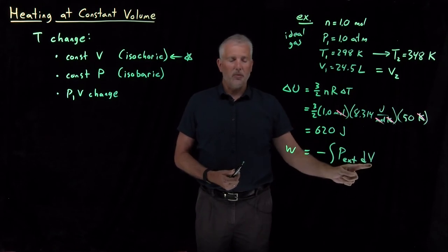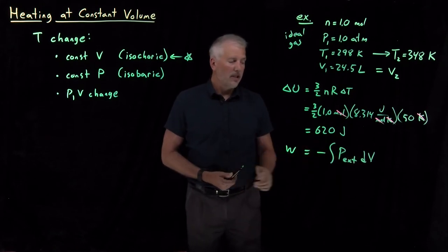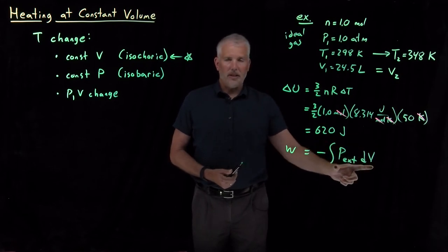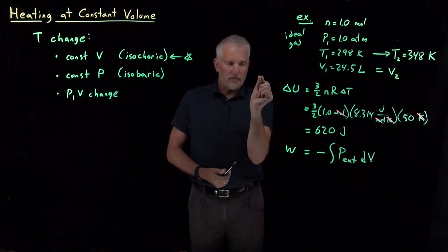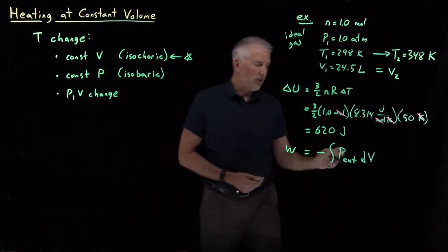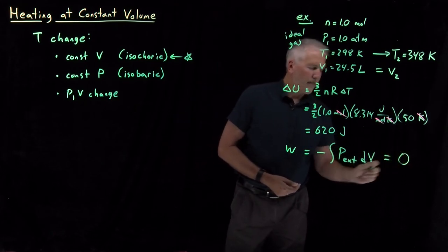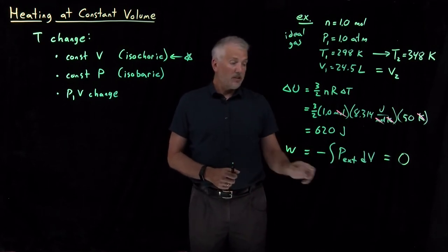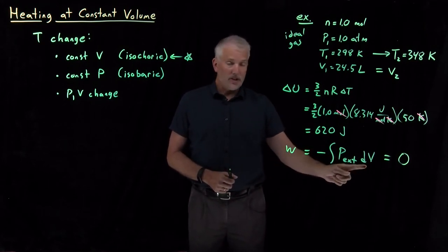There's no change in volume over the whole process. The volume is not changing at all. So the area that I'm calculating in this integral is the area of something that doesn't change on the volume axis. So because dV is zero, this whole integral is zero. The work done in this process is zero because for PV work, if I haven't changed the volume, then I haven't done any PV work.